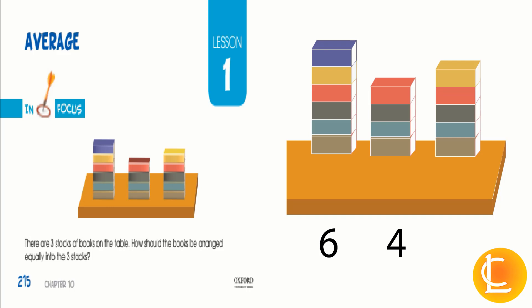Let's count the third stack. One, two, three, four, five. So, in the first stack we have six books. In the second stack we have four books. In the third stack we have five books.